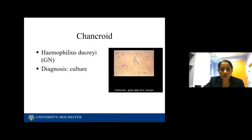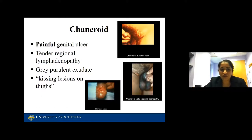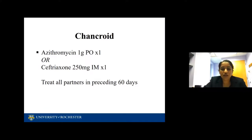Chancroid is caused by Haemophilus ducreyi, and the diagnosis is culture. It is a painful genital ulcer with tender regional lymphadenopathy with green exudate. Exams often give you the cue of kissing lesions on the thighs. Treatment is azithromycin or ceftriaxone, and you definitely want to treat partners irrespective of whether they're symptomatic in the last 60 days.